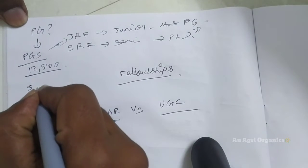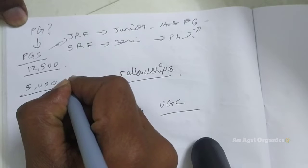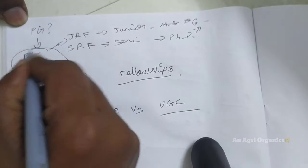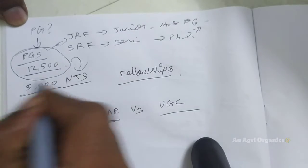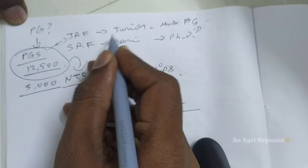Next is some students will get 5,000 rupees per month through ICAR for PG. It is known as NTS, National Talent Scholarship. So those who not got this PG scholarship, they will get this NTS scholarship. So this is for PG.